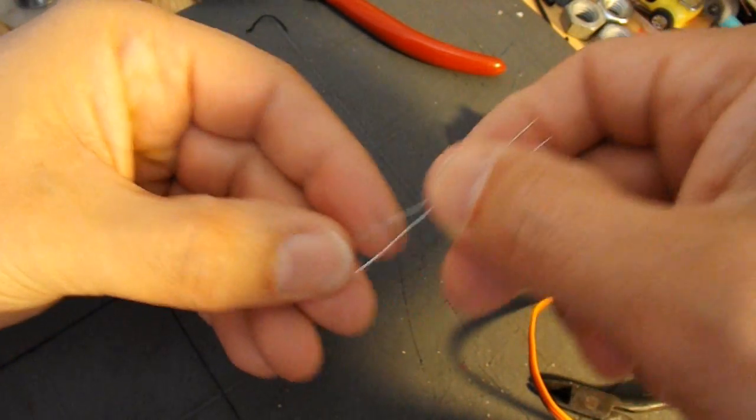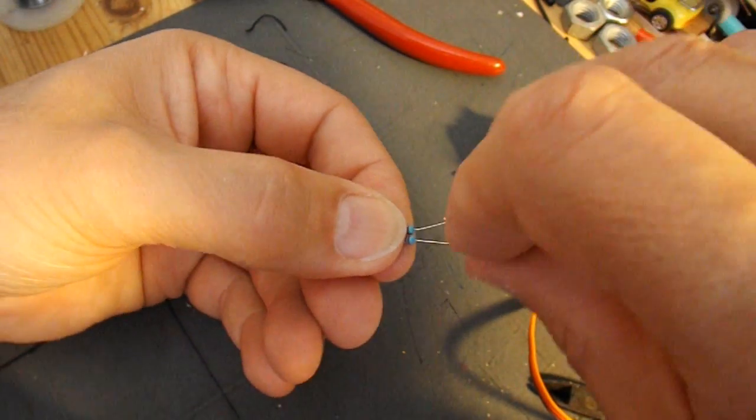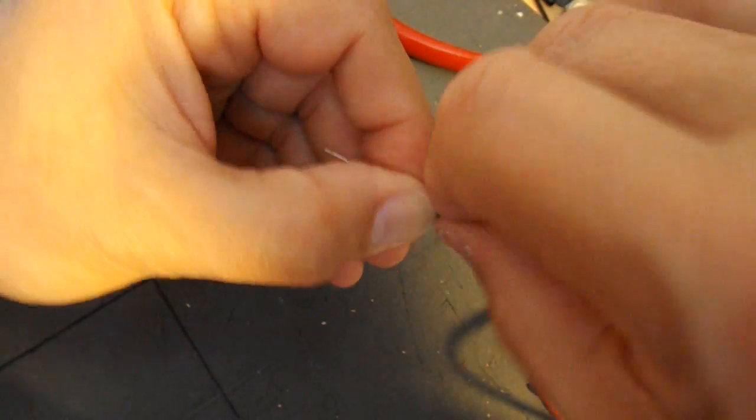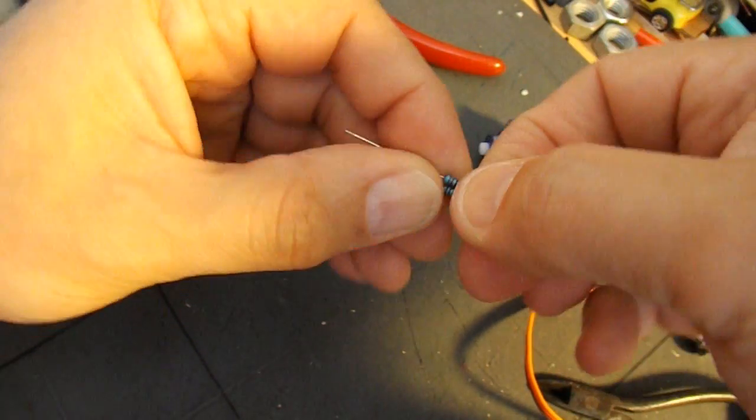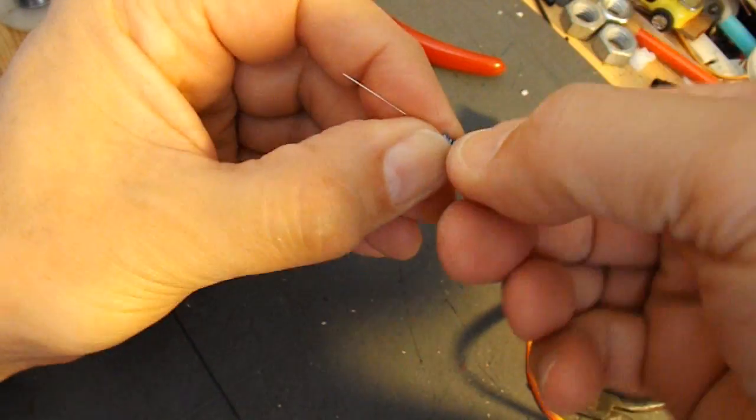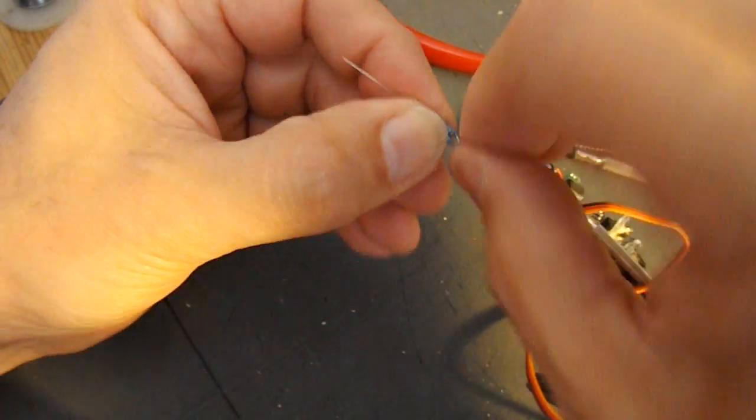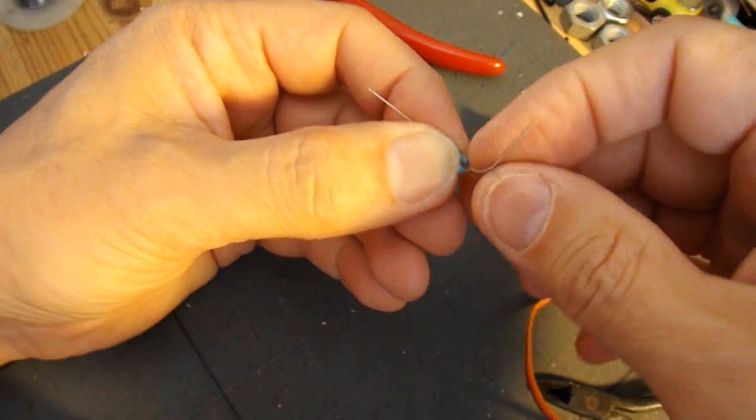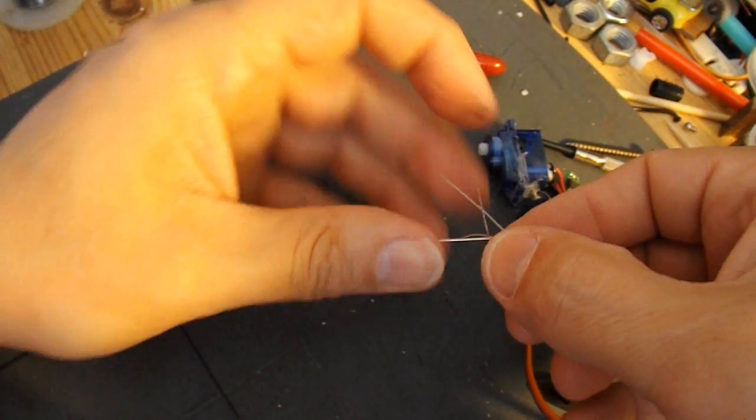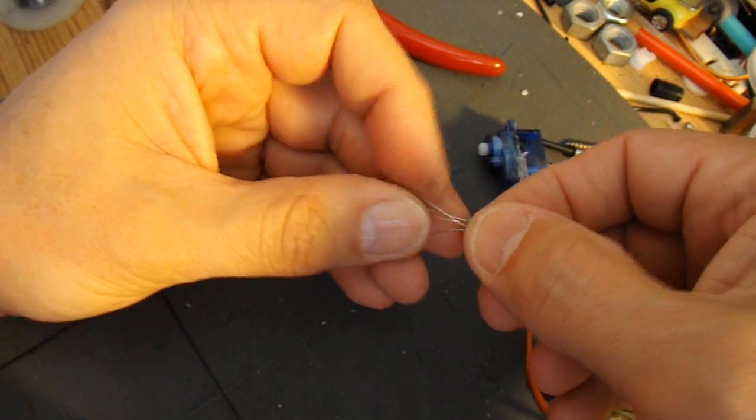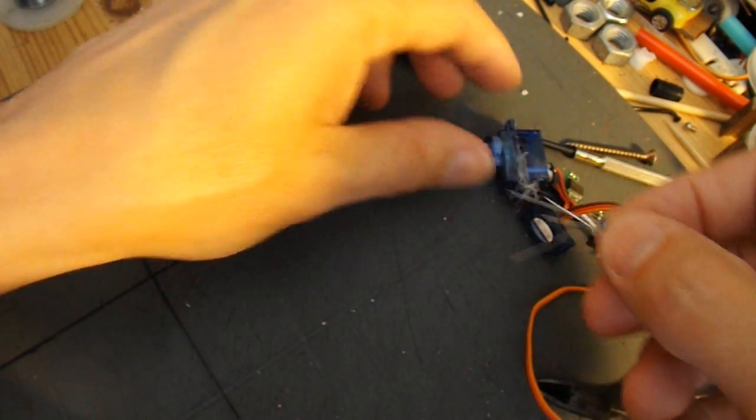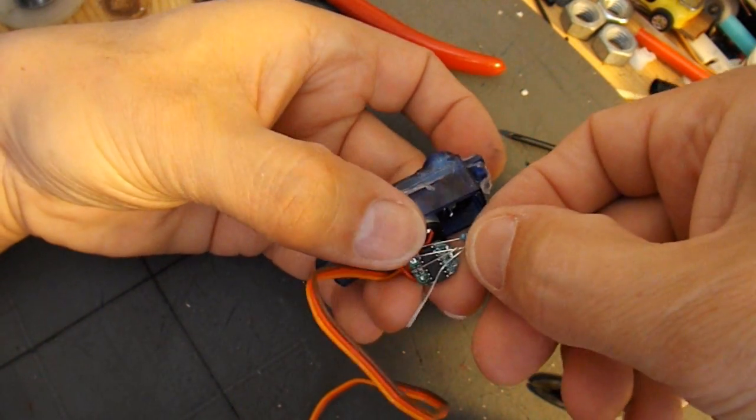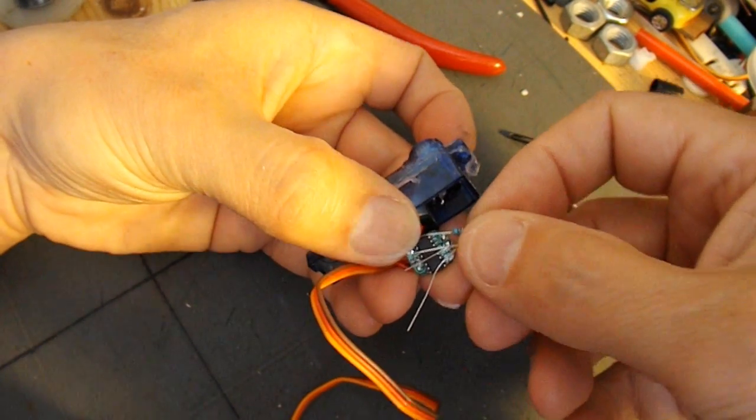We need three legs. So the easiest thing to do is just twist them together. Fold them back. Then we need to solder them onto there.